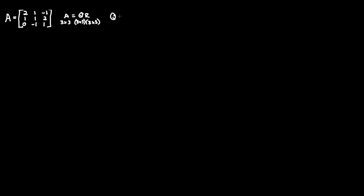Q is composed of three columns: Q1, Q2, and Q3. R is also 3x3 with entries R11, R12, R13, and it is an upper triangular matrix such that if you go below the left diagonal, it's all zeros.